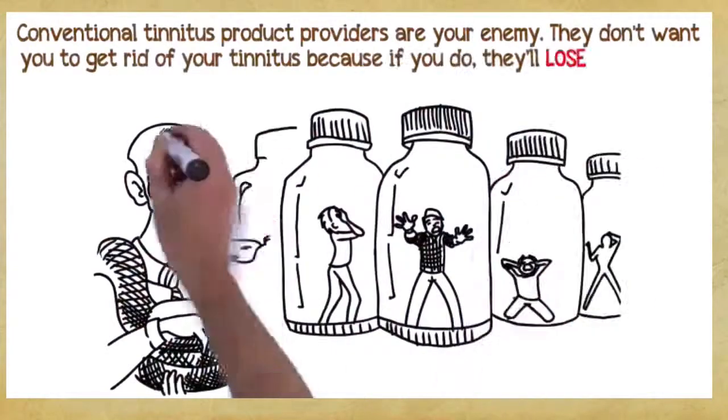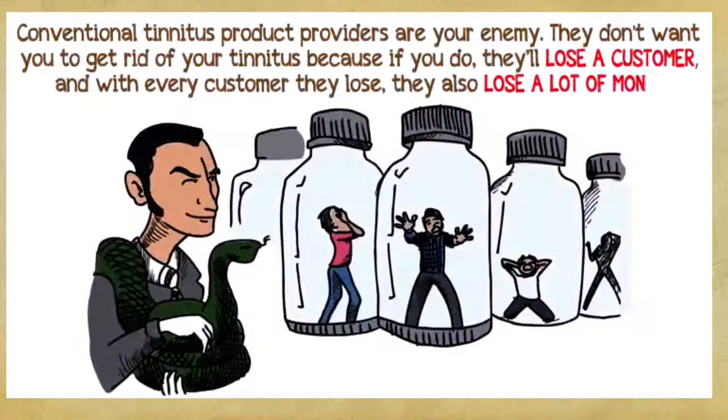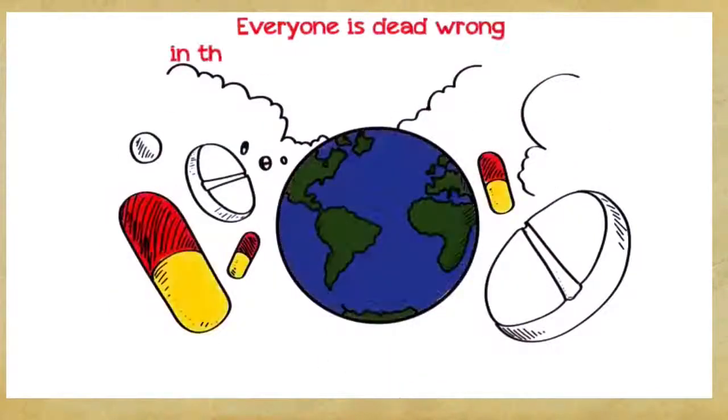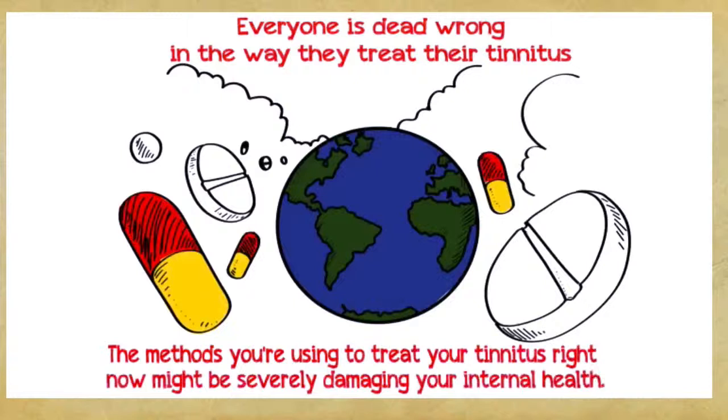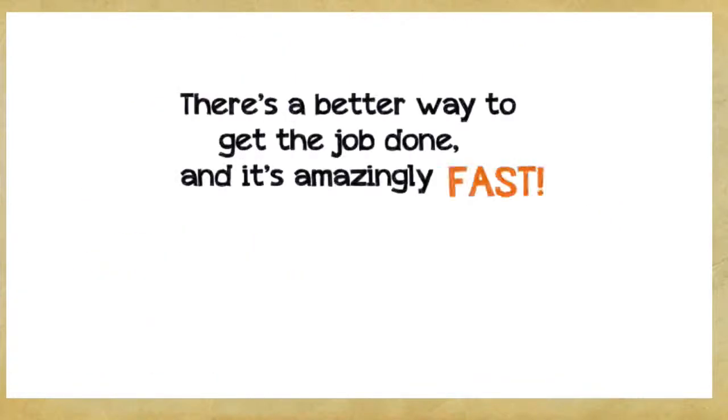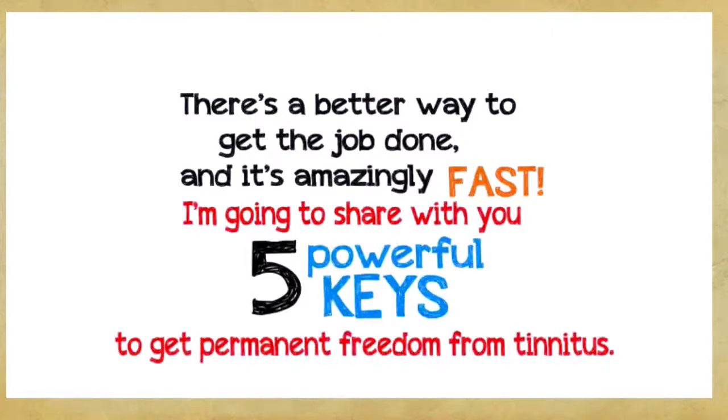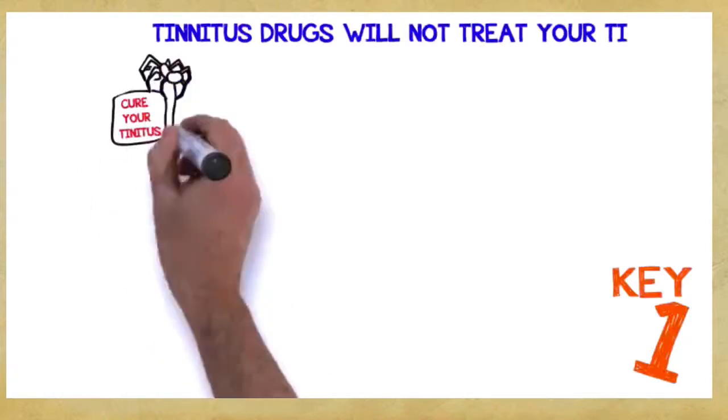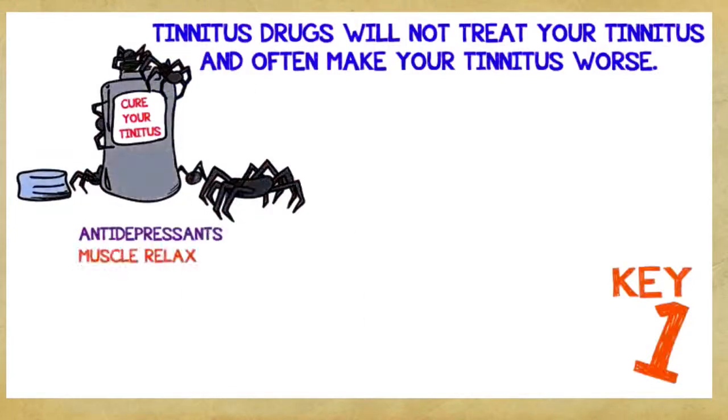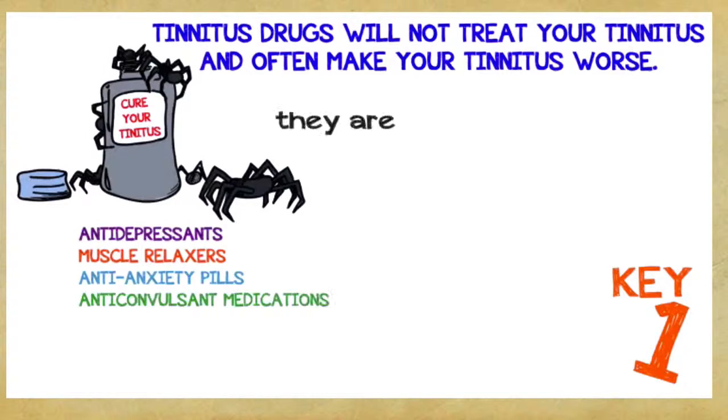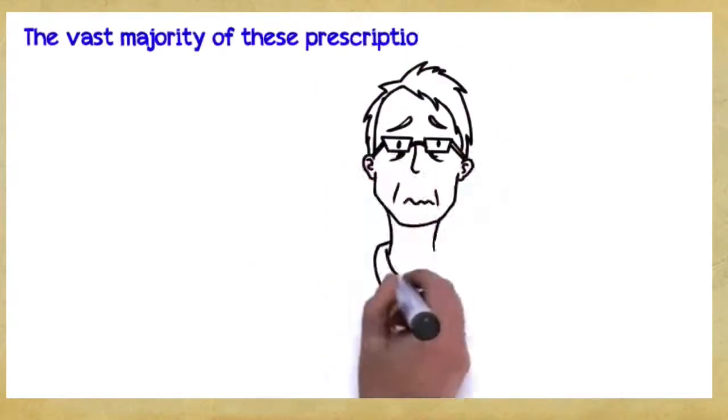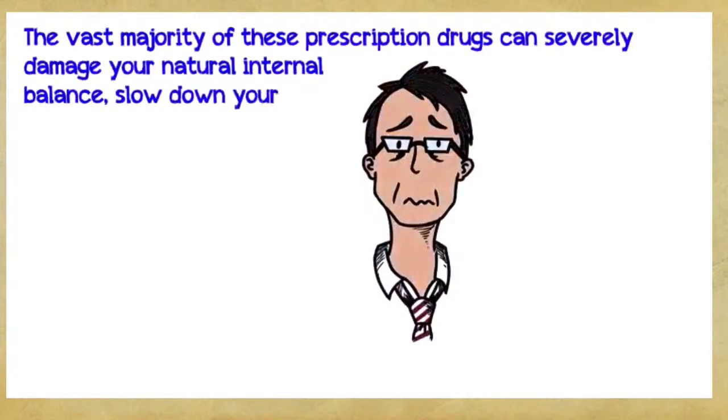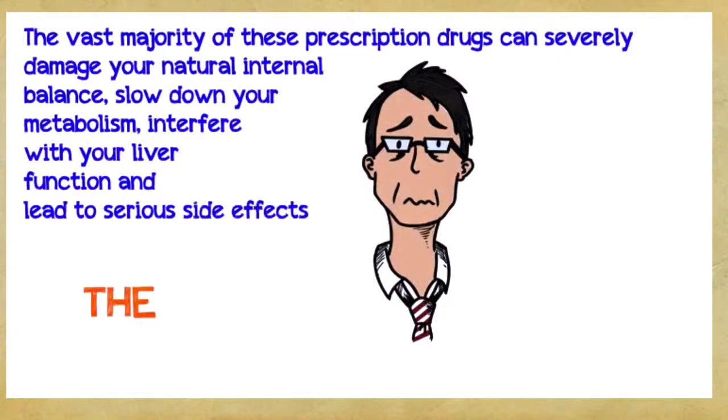They don't want you to get rid of your tinnitus because if you do, they'll lose a customer. And with every customer they lose, they also lose a lot of money. The second thing I discovered is that almost everyone is dead wrong in the way they treat their tinnitus. It's a fact. The methods you're using to treat your tinnitus right now might be severely damaging your internal health. There's a better way to get the job done, and it's amazingly fast. I'm going to share with you five powerful keys to get permanent freedom from tinnitus. Key number one: Tinnitus drugs will not treat your tinnitus and often make your tinnitus worse. Antidepressants, muscle relaxers, anti-anxiety pills, and anti-convulsant medications are just expensive drugs that focus on tinnitus symptoms. These drugs do not work for every tinnitus case, and when they do, the effect is almost always insignificant and lasts for a very short time. The vast majority of these prescription drugs can severely damage your natural internal balance, slow down your metabolism, interfere with your liver function, and lead to serious side effects. This can make your tinnitus worse.